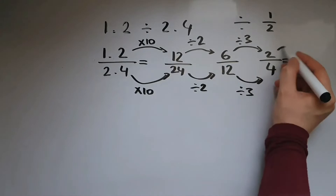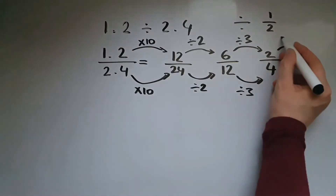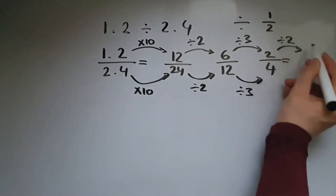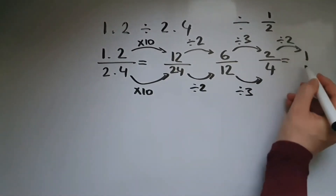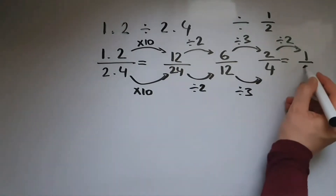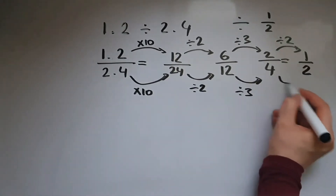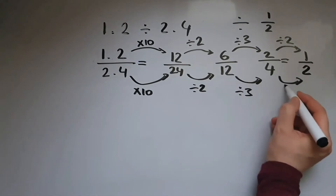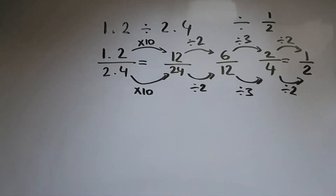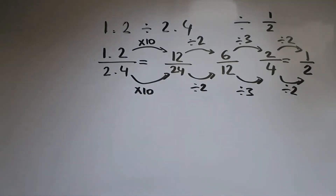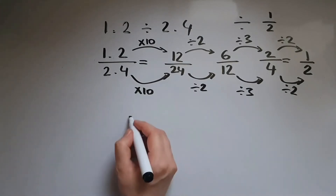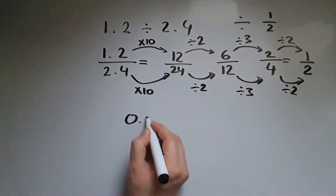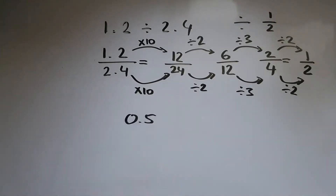I can still divide this by 2, so that gives me 1 over 2, or a half. And we know that a half, if we need to write the answer as a decimal, is going to be 0.5.